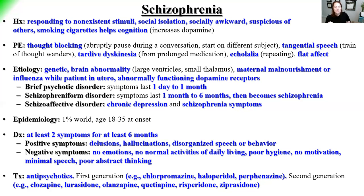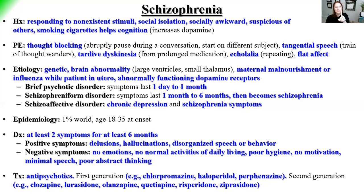The schizophrenia spectrum is distinguished by timeline: brief psychotic disorder is one day to one month; schizophreniform disorder is one to six months; after six months, it becomes schizophrenia. Same symptoms, same history, same physical exam findings — only the timeline differentiates them. Schizoaffective disorder is when the patient has both schizophrenic symptoms and a mood disorder, such as depression plus schizophrenic symptoms.